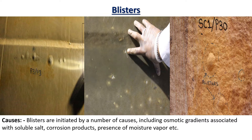Blisters can be classified into two categories: osmotic blisters and non-osmotic blisters. There are some well-known mechanisms or driving forces that fuel osmotic blister formation. In simple terms, the actions of these forces result in the accumulation or concentration of moisture at specific points within the coating film.